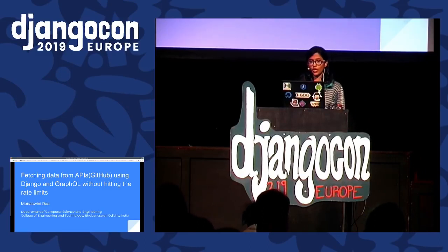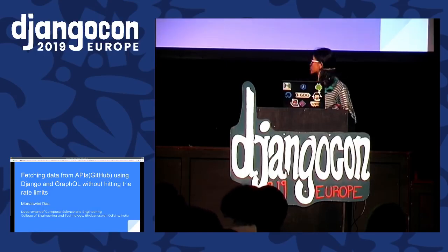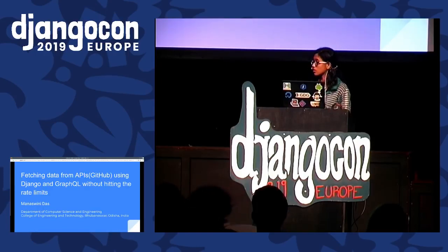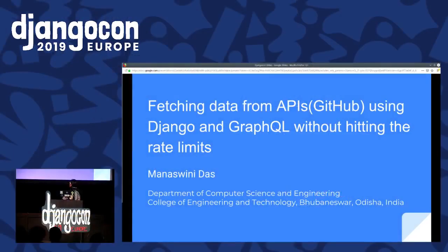Hello world, hello Django-nauts, hello netizens. I'm here to talk about fetching data from APIs using Django and GraphQL without hitting rate limits. It's a pretty long title. It's my first international talk, so I may have to work on titles more.